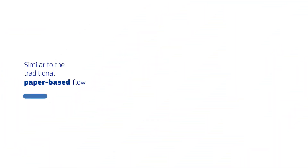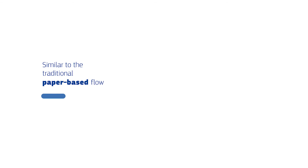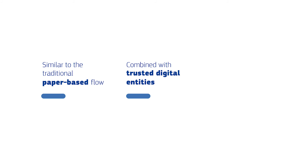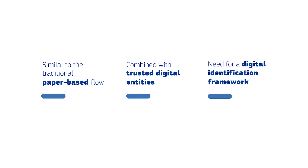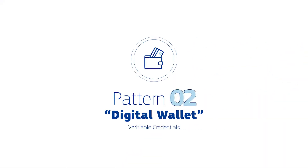So what did we cover in this episode? Firstly, that the digital post office is similar to a traditional paper-based flow of a post office. Secondly, the digital post office must be combined with the concept of trusted digital entities. And finally, we've learned that a digital identification framework is a crucial prerequisite for this pattern to work. This is a solid foundation for moving on to the next episode where we're going to explore the digital wallet pattern.